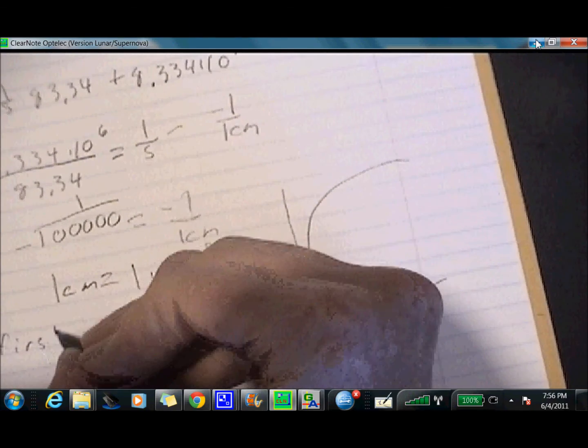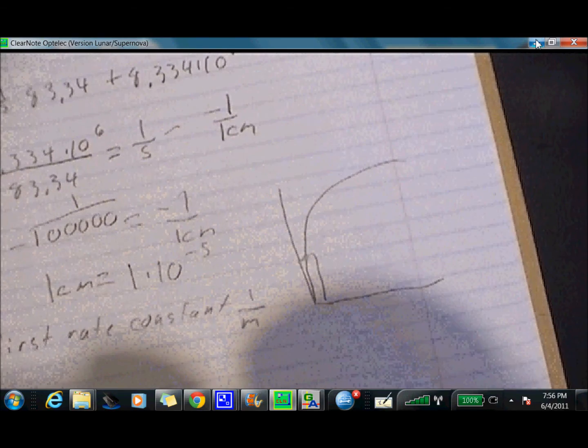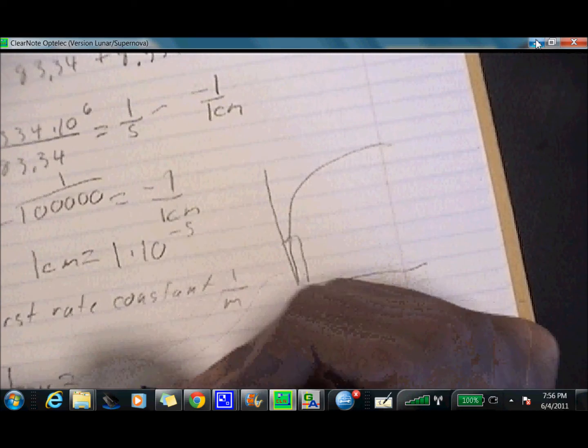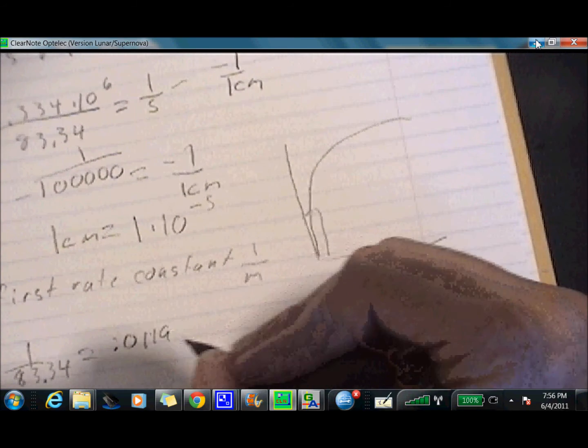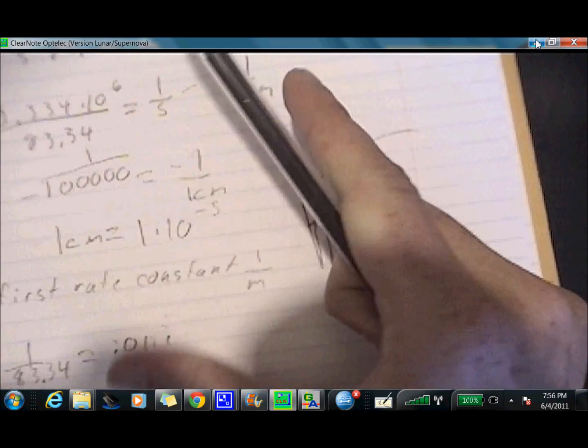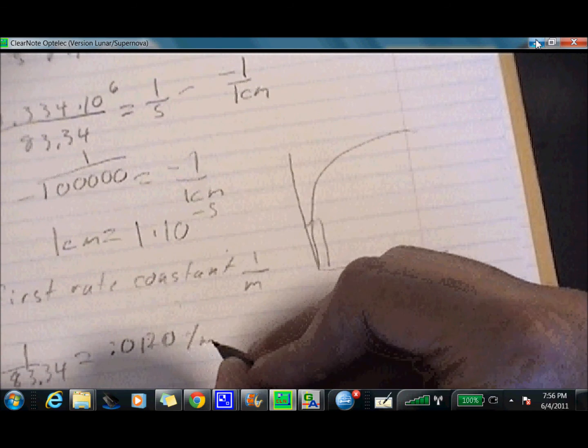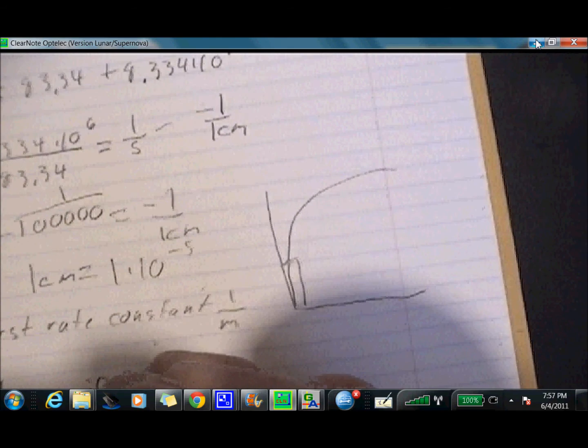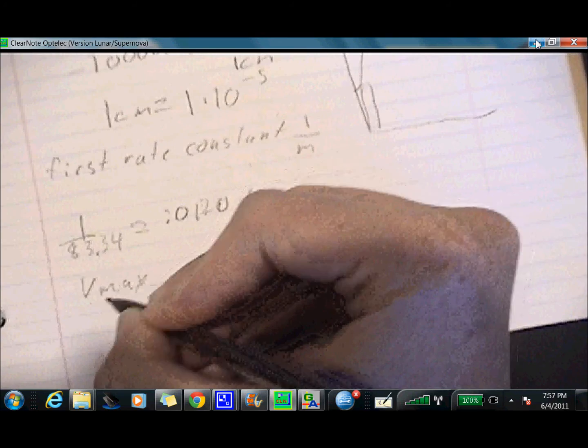So your first rate constant is 1 divided by your slope. Okay. So what that is, is 1 divided by 83.34 is going to equal 0.0119 or as they like to say, or actually, which is more correct because of rounding is 0.020. And this is going to be per minute. That's the units on it. So another way to write your first rate order constant as well, because if you look at the slope, it's Km over Vmax. You can also find it if you know your Vmax and Km. Your first rate order constant is going to be Vmax over Km.